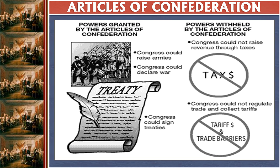This brings us to the Articles of Confederation. Its strengths were mostly that it gave Congress powers to deal with foreign threats — to raise armies, declare war, and sign treaties collectively with foreign powers. What it didn't give was any powers over domestic administration. Congress could not raise money through taxes; it had to politely ask the states for support. It also had no power to overcome barriers to trade between the colonies — it couldn't regulate trade or collect tariffs, and there were many inter-colonial tariffs creating hindrances to trade.